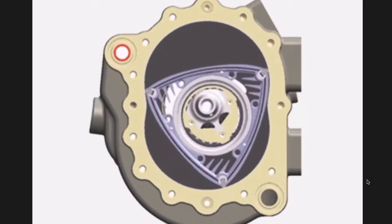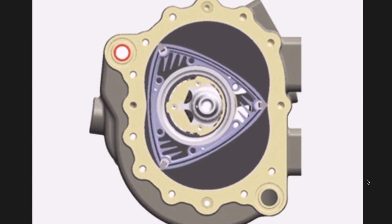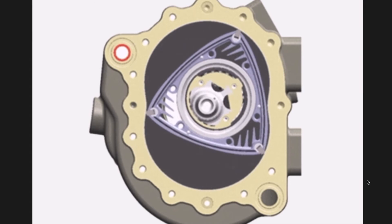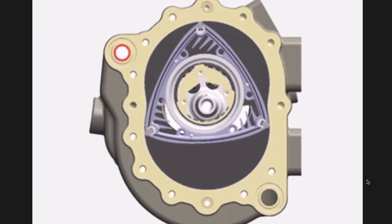Now I'm going to go over the pros and cons of a rotary engine. Starting with the pros: rotary engines are much simpler than piston engines. They don't have any valve trains or timing belts. They also have no reciprocating mass, which allows them to rev much more freely — they can rev upwards to 9,000 RPM, unlike a regular piston engine that can rev up to 5,000 or 6,000 RPM.